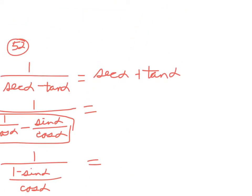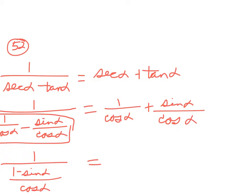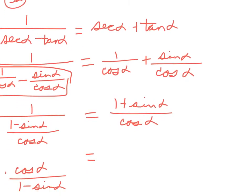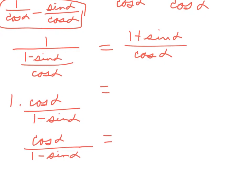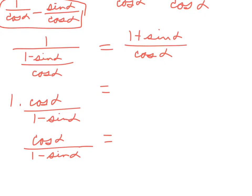In sines and cosines over here, we'd have 1 over cosine plus sine over cosine, which gives 1 plus sine over cosine. So we're not there yet.